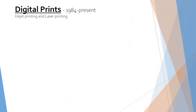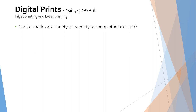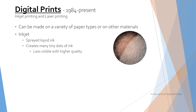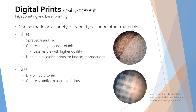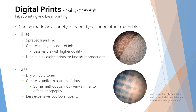Digital prints have been used since 1984 to produce physical copies of digital photographs and images. There are many types, but the two most popular methods are inkjet and laser prints. Both can create prints on a wide variety of paper types and other materials such as plastic, metal, glass, canvas, and fabric. Inkjet printing sprays liquid ink onto the support, which creates many tiny dots of ink that become less visible with higher quality prints. Giclée prints are high quality inkjet prints made with archival grade ink and paper, most commonly used for fine art reproductions. Laser printing can either use dry or liquid pigment-based toner and creates very uniform patterns of dots. Some laser printing methods look very similar to offset lithography printing and will create the same halftone and rosette patterns. Laser prints are less expensive to produce, but the quality of the print tends to be lower.